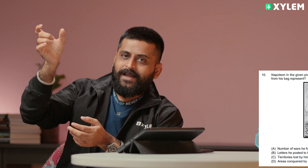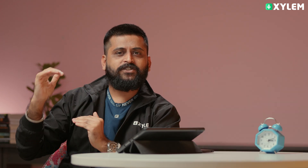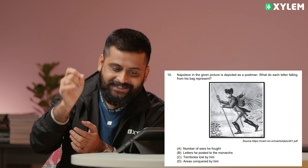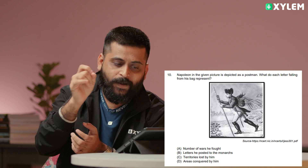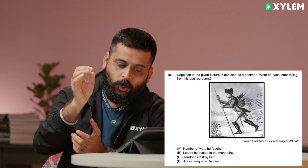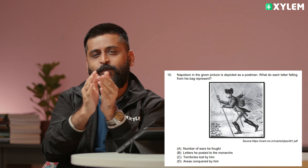In this chapter, the picture-based question is not directly related to Napoleon as text — it is a visual/picture-based question, not an MCQ type. Napoleon is depicted as a postman in the picture. What does each letter falling from his back represent? That is our question. Option C is the answer — that the territory is lost by him. The same answer is depicted in the picture.